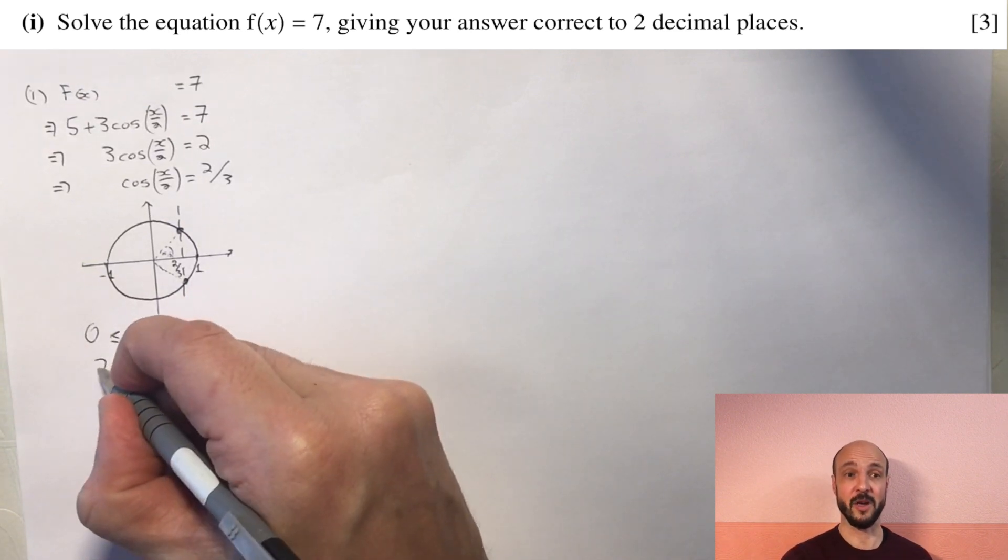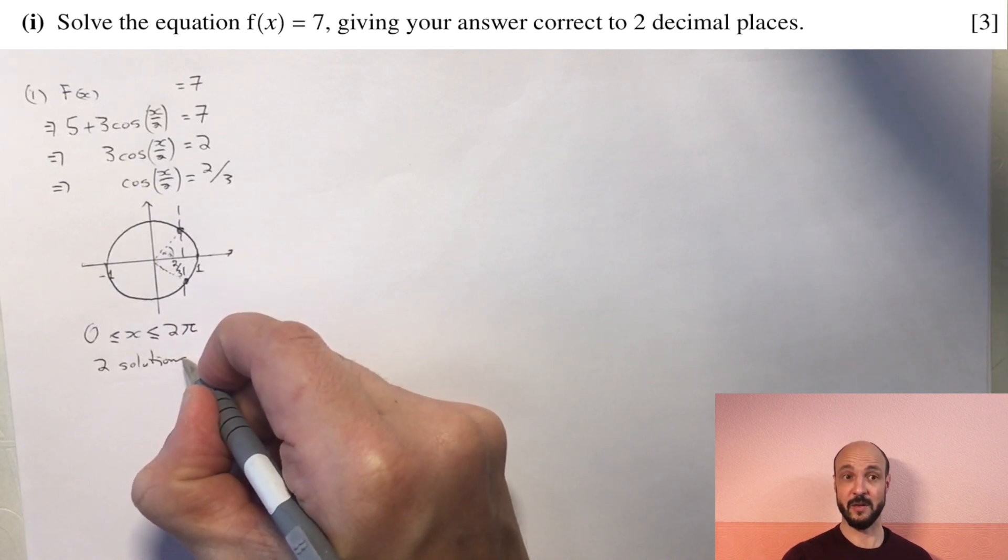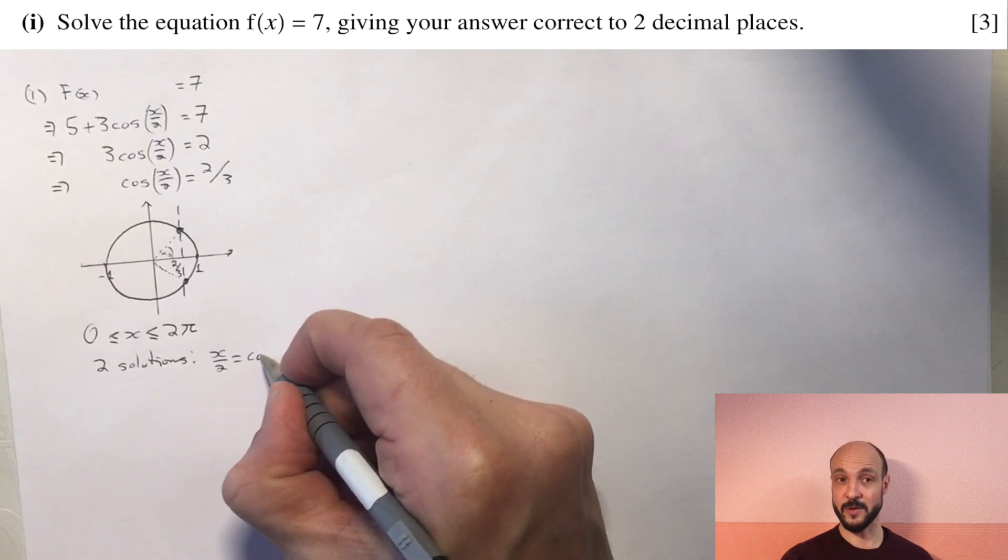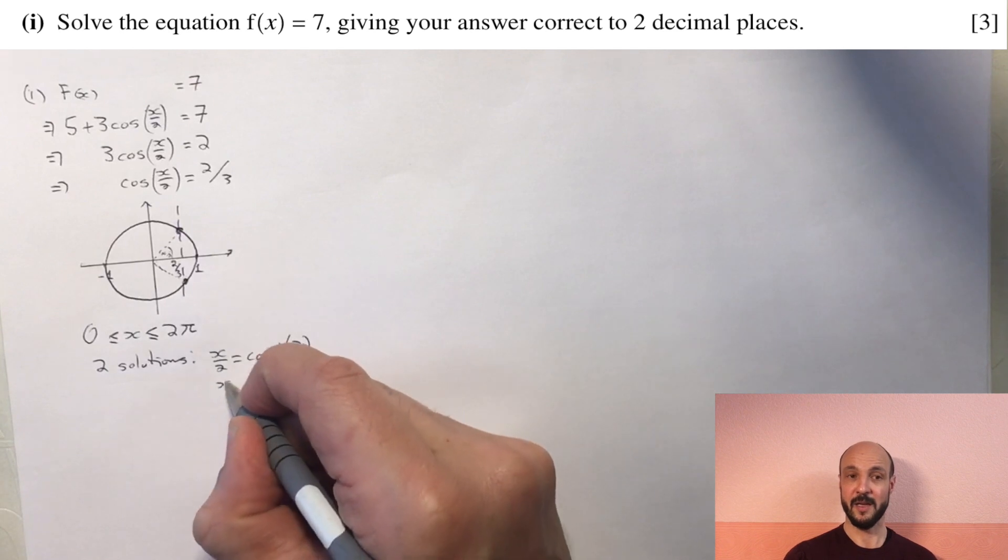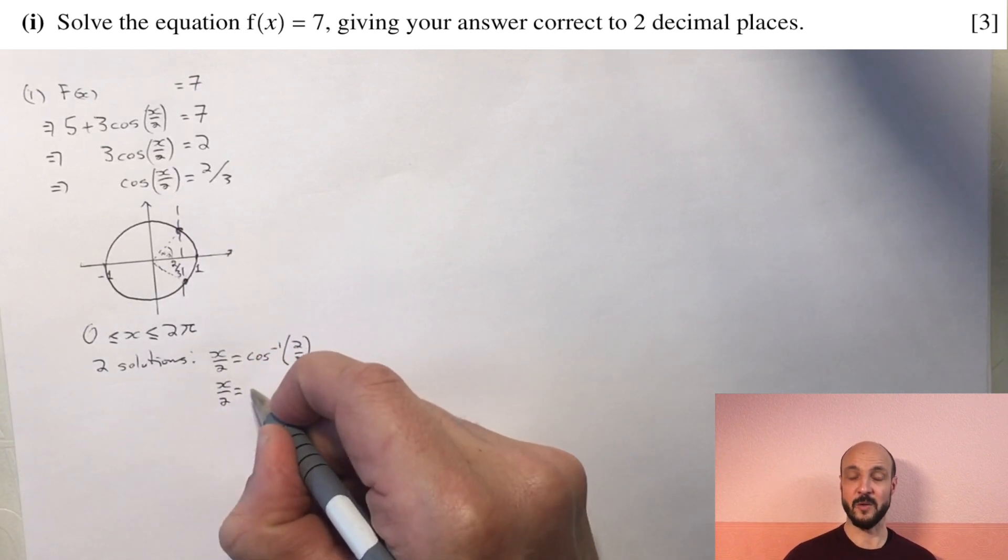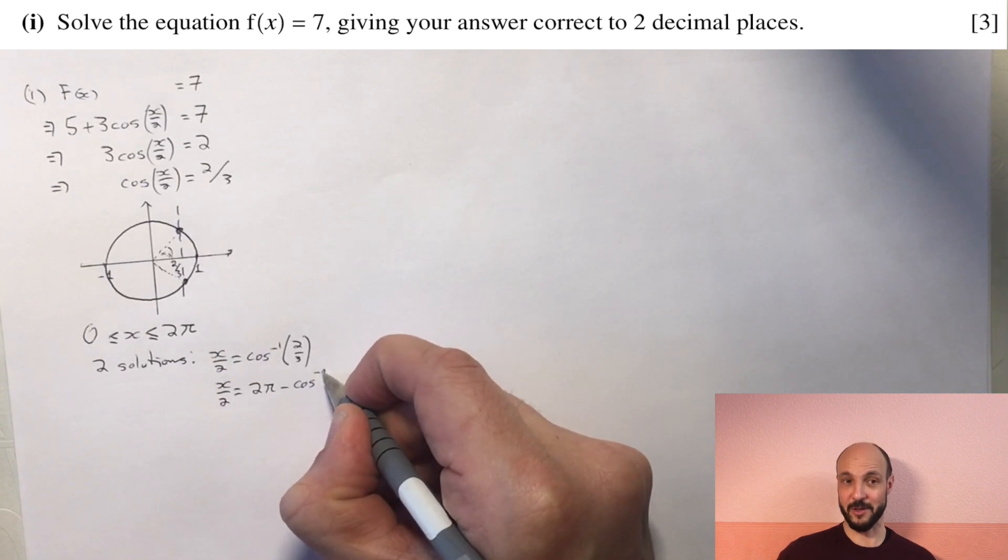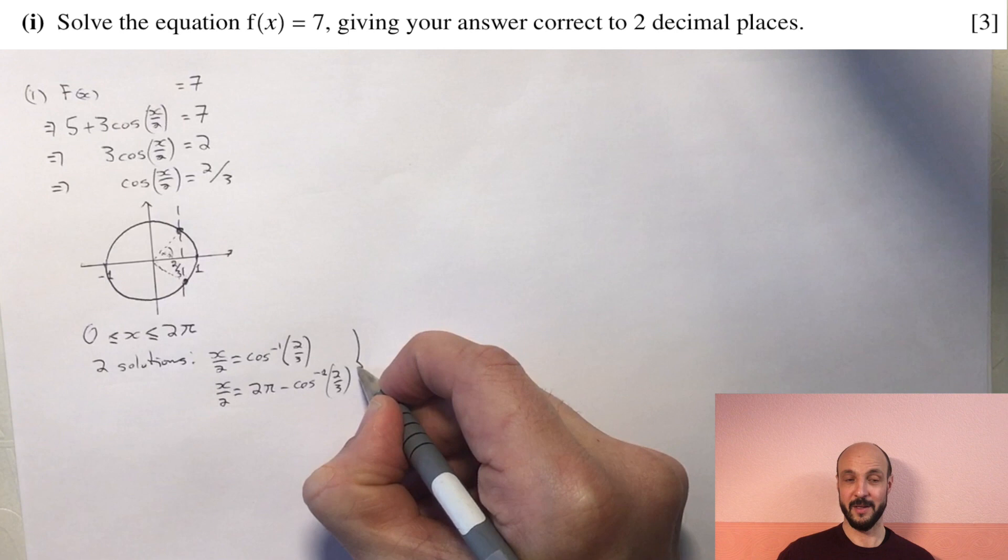So the two solutions that we've got are x over 2 equals the inverse cosine of 2 over 3, and x over 2 equals 2π, that's the full circle, minus the inverse cosine of 2 over 3. Now that gives us x over 2 equals 0.841, and x over 2 is approximately 6.28 minus 0.841.